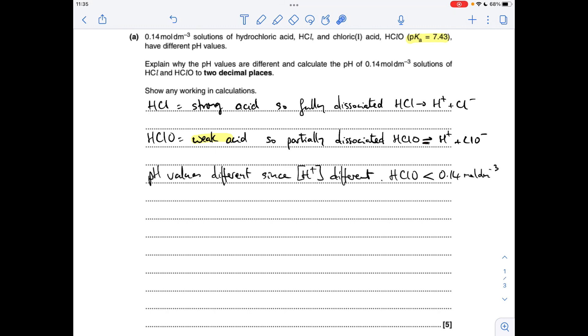So because of that, the pH values are different, because they have different H plus concentrations. So the HCl would have the H plus concentration of 0.14, due to the complete dissociation, whereas HClO is going to be less than 0.14. So the pH of HCl is just going to be the minus log of 0.14, so at the two decimal places that's 0.85.